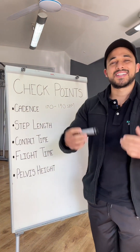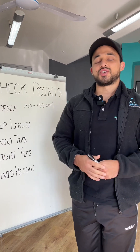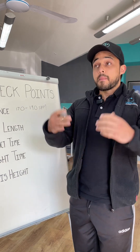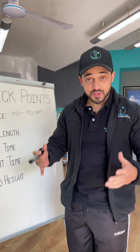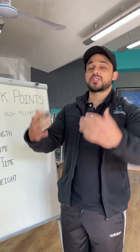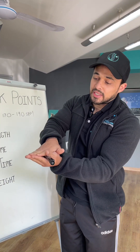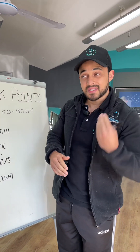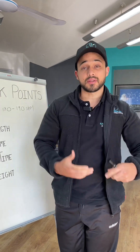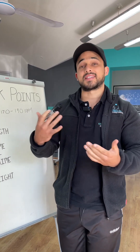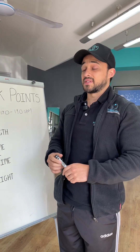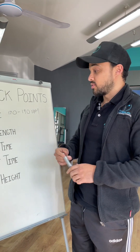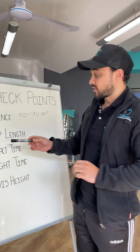Next is contact time, which is the amount of time you are in contact with the ground. Most people who have issues running usually have an increased contact time — they are in contact with the ground for a long period. This increases stress on the joints, causing them to stiffen, and as a result you develop aches and pains. You want to limit contact time.